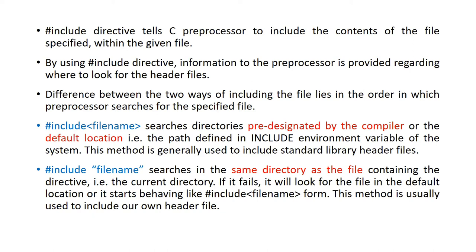Most of you who know C programming know that we always include a hash include directive at the very beginning of the program, and most of us have used stdio.h very commonly in our C programs. The hash include directive is used to tell the C preprocessor to include the contents of the specified file. By using this directive, information is given to the preprocessor regarding where to look for the header files.